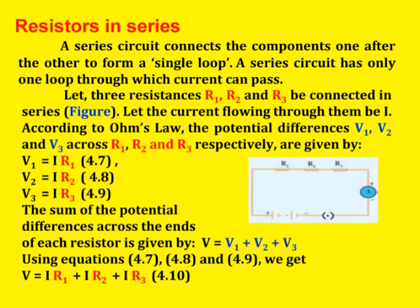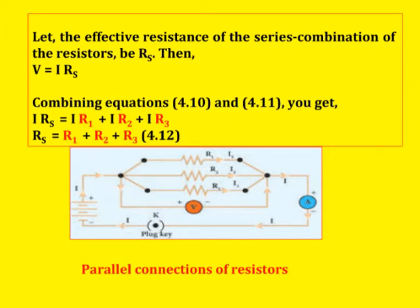Next, resistors in series. A series circuit connects the components one after the other to form a single loop, and has only one loop through which current can pass. For three resistances R1, R2, and R3 connected in series with potential differences V1, V2, and V3: V1 = IR1, V2 = IR2, V3 = IR3. The final formula gives V = IR1 + IR2 + IR3. For a series combination, V = IRS, so RS = R1 + R2 + R3. When N resistors of equal resistance R are connected in parallel, the equivalent resistance is R / N. The equivalent resistance in a parallel combination is less than the lowest individual resistance.